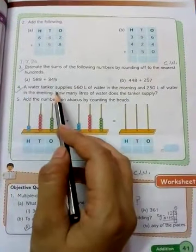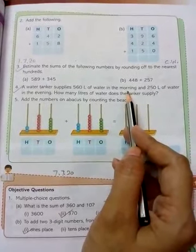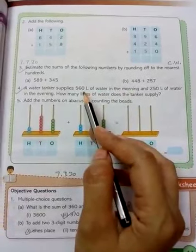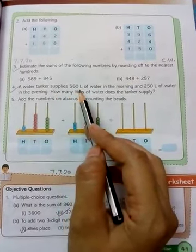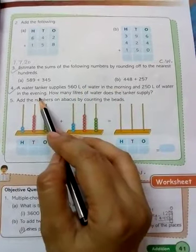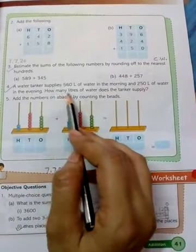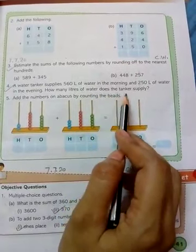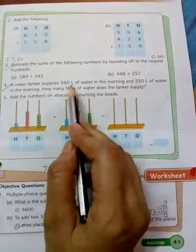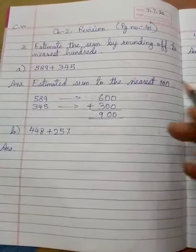Next question is: A water tanker supplies 560 liters of water in the morning and 250 liters in the evening. How many liters of water does the tanker supply? So we have to add. I will just show you.